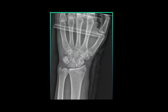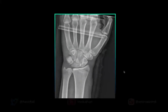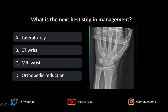We have a frontal view of the wrist, and there is definitely an intraarticular radial fracture — I'm not concerned about that — but there is another finding here, and hopefully we can decipher what that is. So what's the next best step in management based on the other finding that's not the intraarticular radial fracture?